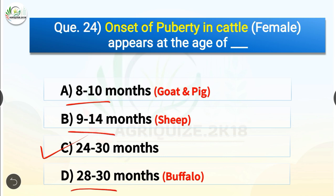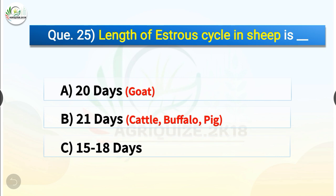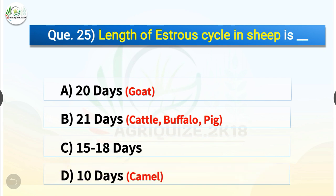Question number 25. Length of estrus cycle in sheep is dash. The options are 20 days, 21 days, 15 to 18 days or 10 days. The correct answer is option C, 15 to 18 days. So the length of estrus cycle in sheep is 15 to 18 days. In goat it is 20 days; in cattle, buffalo and pig it is 21 days; and in camel it is 10 days.